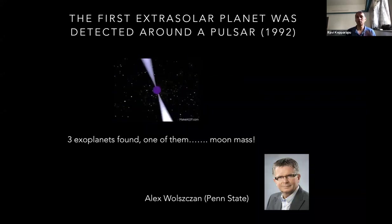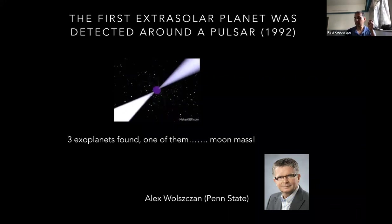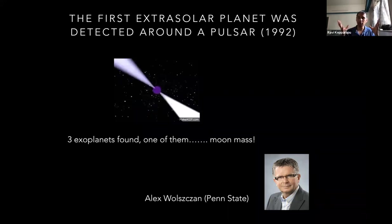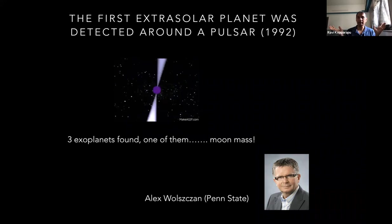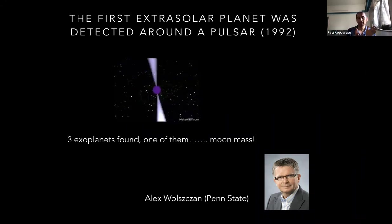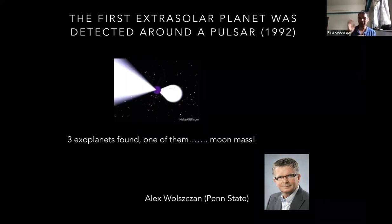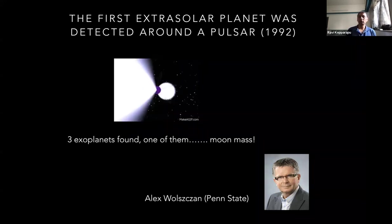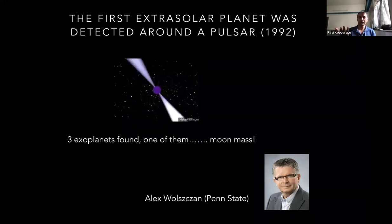When he and his team estimated what those objects were and figured out their masses, they found three exoplanets — and one of them was actually moon mass, the mass of our moon. This was a stunning result: how can planets form around a neutron star, a pulsating neutron star? As you probably heard, a neutron star forms after a supernova explosion, which means the explosion may have blown up any planets around it. So how did these planets form? This was a very stunning result back in 1992, showing that real planets could exist outside our solar system, even around a dead star.